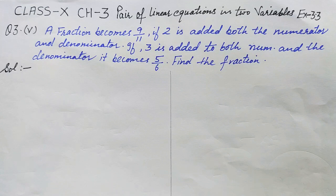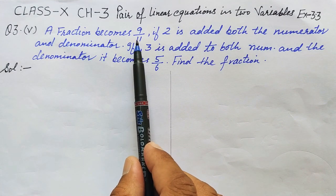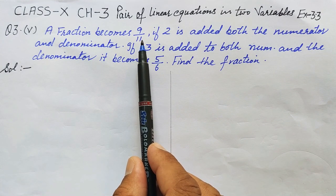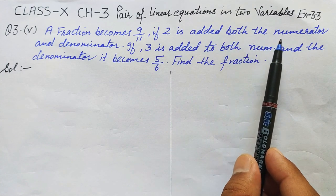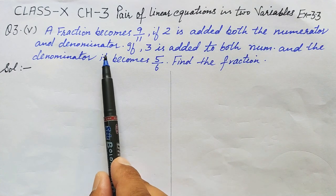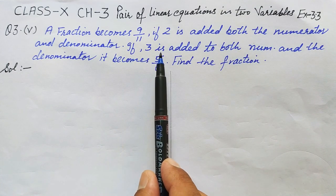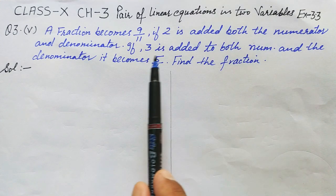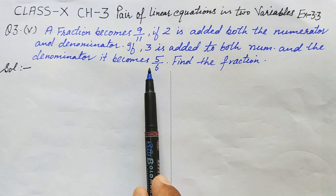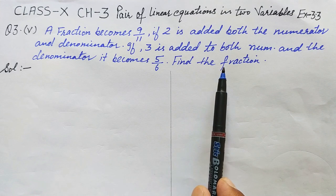Hello dear students, welcome to this math class. Let's solve this question. The question is: a fraction becomes 9 over 11 if 2 is added to both the numerator and denominator. If 3 is added to both numerator and denominator, it becomes 5 over 6. Find the fraction.